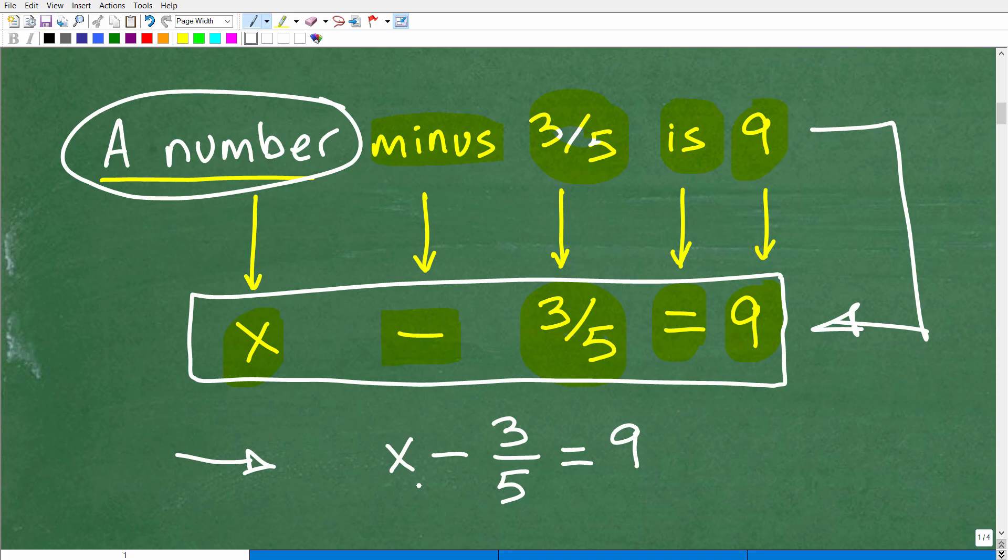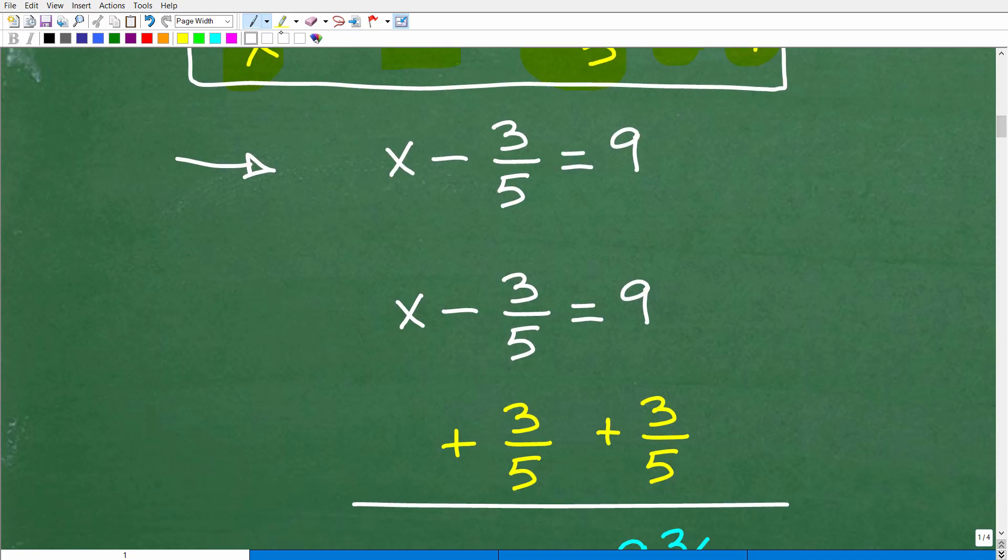So this is really what we're talking about right here: X minus three-fifths is equal to nine. And so this really comes down to the remainder of this problem, your ability to solve basic equations. So to solve for X, I have X minus three-fifths is equal to nine. All I need to do is add three-fifths to both sides of the equation. So I want to really get X by itself.